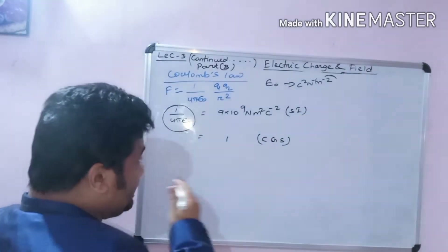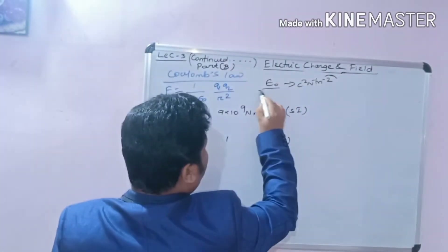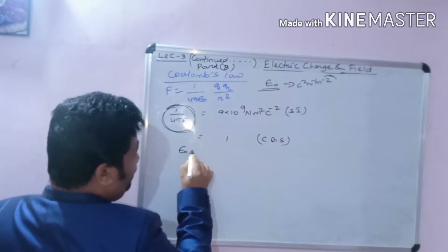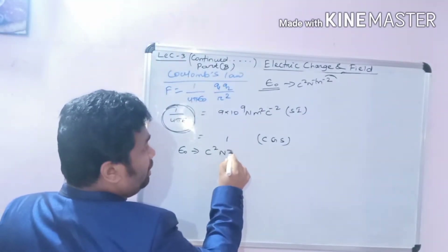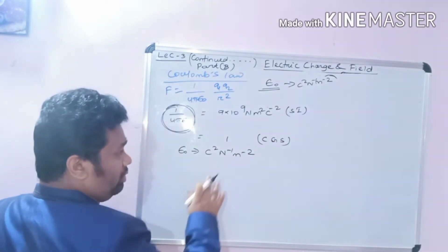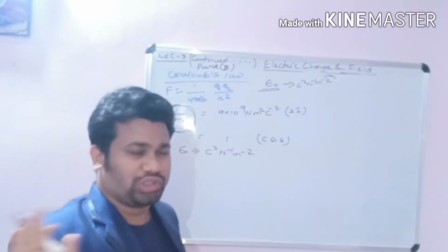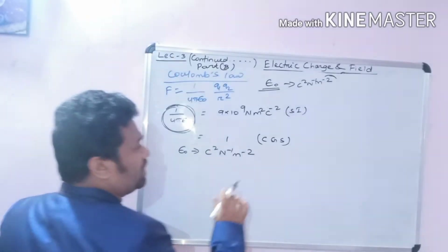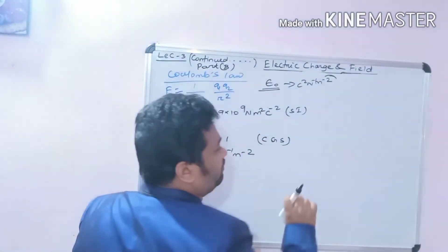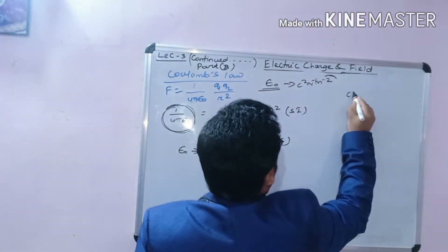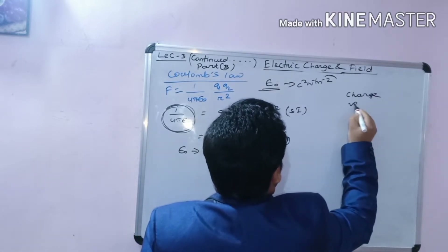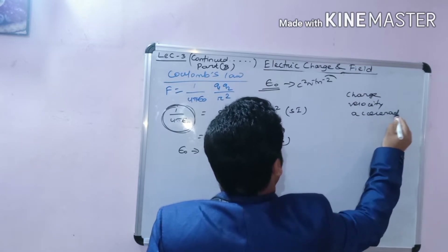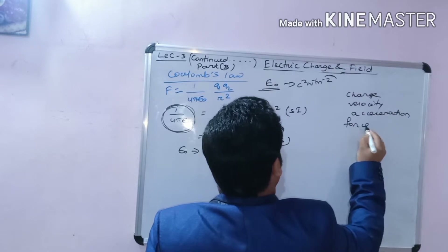Now let's calculate the dimension of epsilon-0. The unit technique: epsilon-0 unit is coulomb squared newton inverse meter inverse squared. This is a very simple dimensional formula. Students, in physics there is a trick — only 4 to 5 quantities like charge, velocity, acceleration, and force need their dimensional formulas memorized.